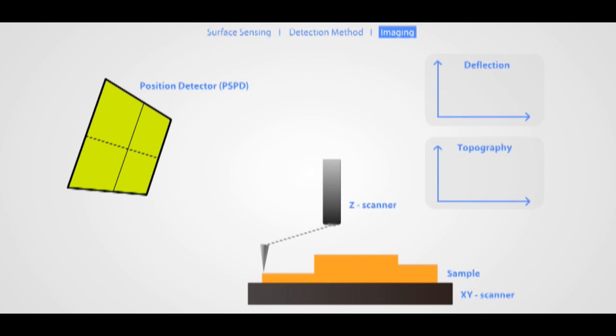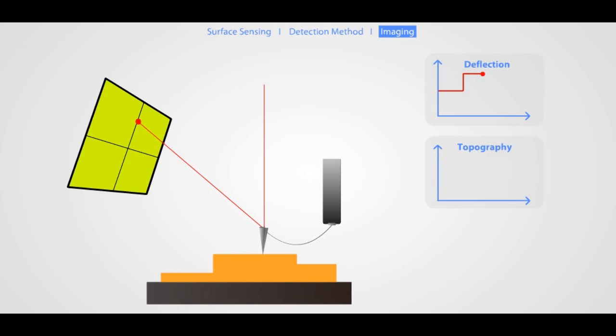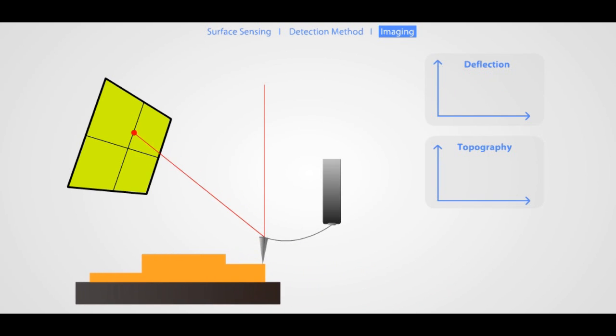Using the detection method explained earlier, an AFM images the topography of a sample surface by scanning the cantilever over a region of interest. The raised and lowered features on the sample surface influence the bending of the cantilever measured by the position detector.